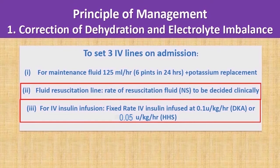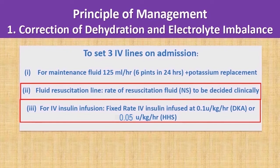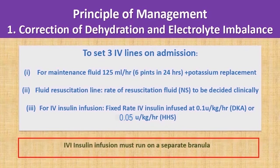The second IV line is reserved for fluid resuscitation, with the rate dependent on the patient's clinical status. Generally, the first one or two litres of fluid resuscitation are given in a bolus manner in patients with normal cardiac and renal reserve. Both DKA and HHS subjects require fixed-rate IV insulin infusions. For DKA, the infusion rate is 0.1 unit/kg/hour until ketosis resolves. For HHS, the fixed-rate IV insulin infusion is 0.05 unit/kg/hour, as HHS subjects are more sensitive to insulin and the main driver of HHS is dehydration.